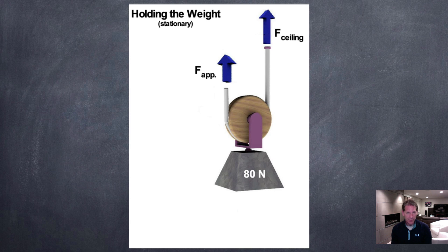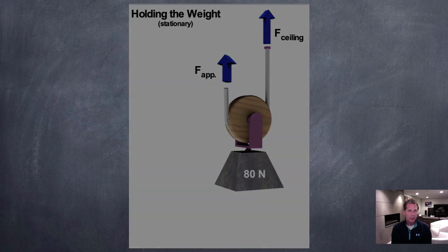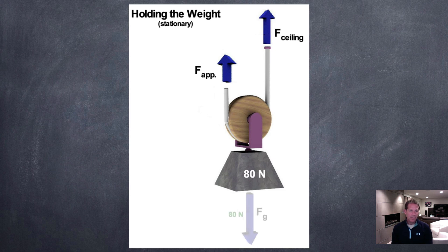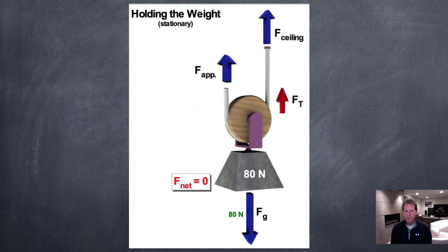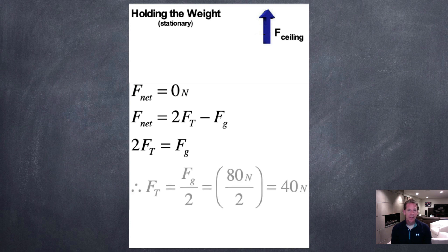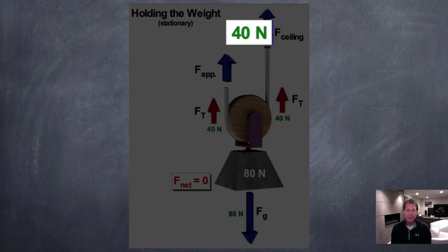The other pulley configuration we looked at in the previous screencast: this time we focus on the pulley itself. The net force is zero, but we have two ropes pulling up and one force of gravity pulling down. So the net force equation gives us two forces of tension upward equaling the force of gravity downward. Solving for the force of tension, it must be half of the force of gravity — only 40 newtons. This is why it was easier to lift the weight in this case: we only had to pull with 40 newtons rather than 80. The force on the ceiling is also just 40 newtons.